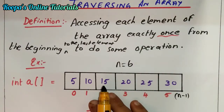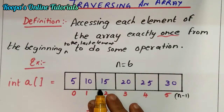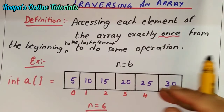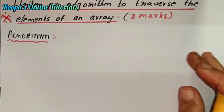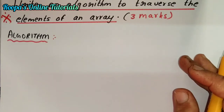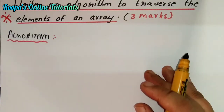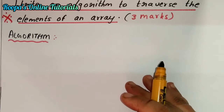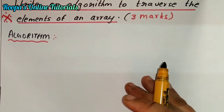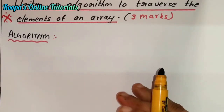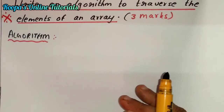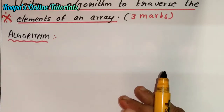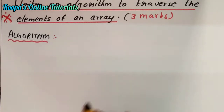Now we are going to look at the algorithm for traversing. This was asked for three marks in your last year midterm and preparatory exams. The question will be: 'Write an algorithm to traverse the elements of an array.' It will be for three marks.